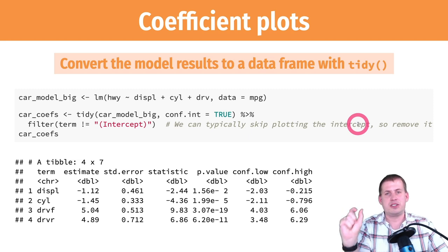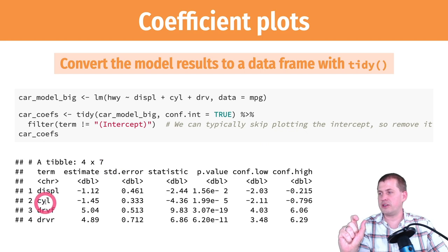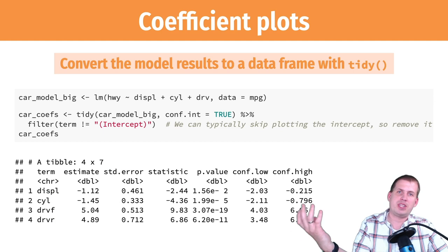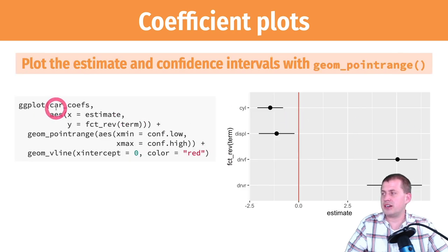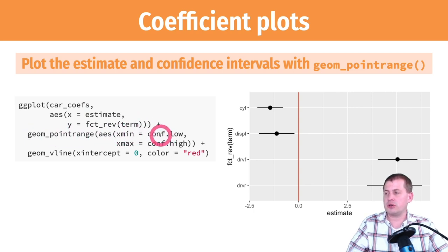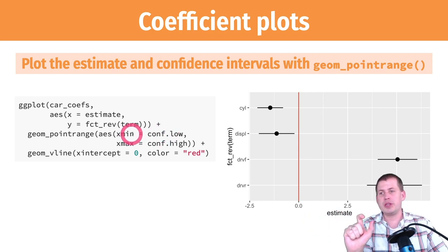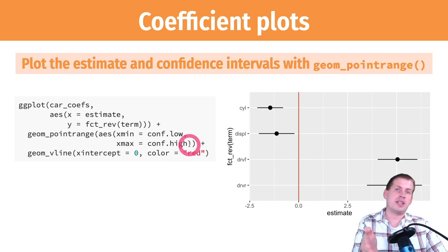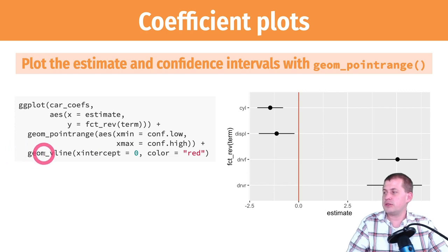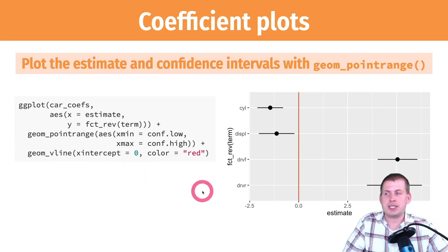That leaves us with a table of four coefficients: displacement, cylinders, and the two drive types. Because it's a dataset we can plot it. We take that car_coefficients dataset, map the estimate to the x-axis, map the term name to the y-axis, and use geom_pointrange to show confidence intervals — the minimum is the low end of the 95% CI and the maximum is the high end. Then to show statistical significance we add geom_vline at zero, colored red.